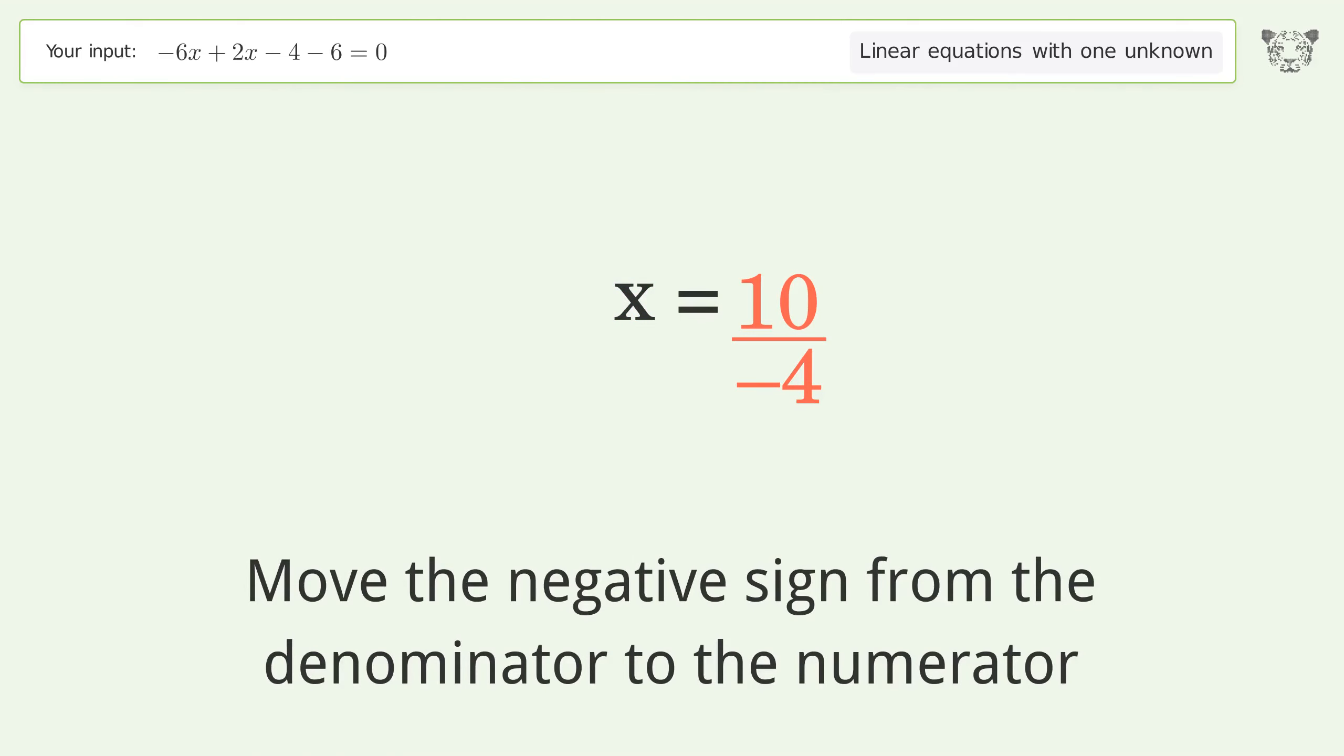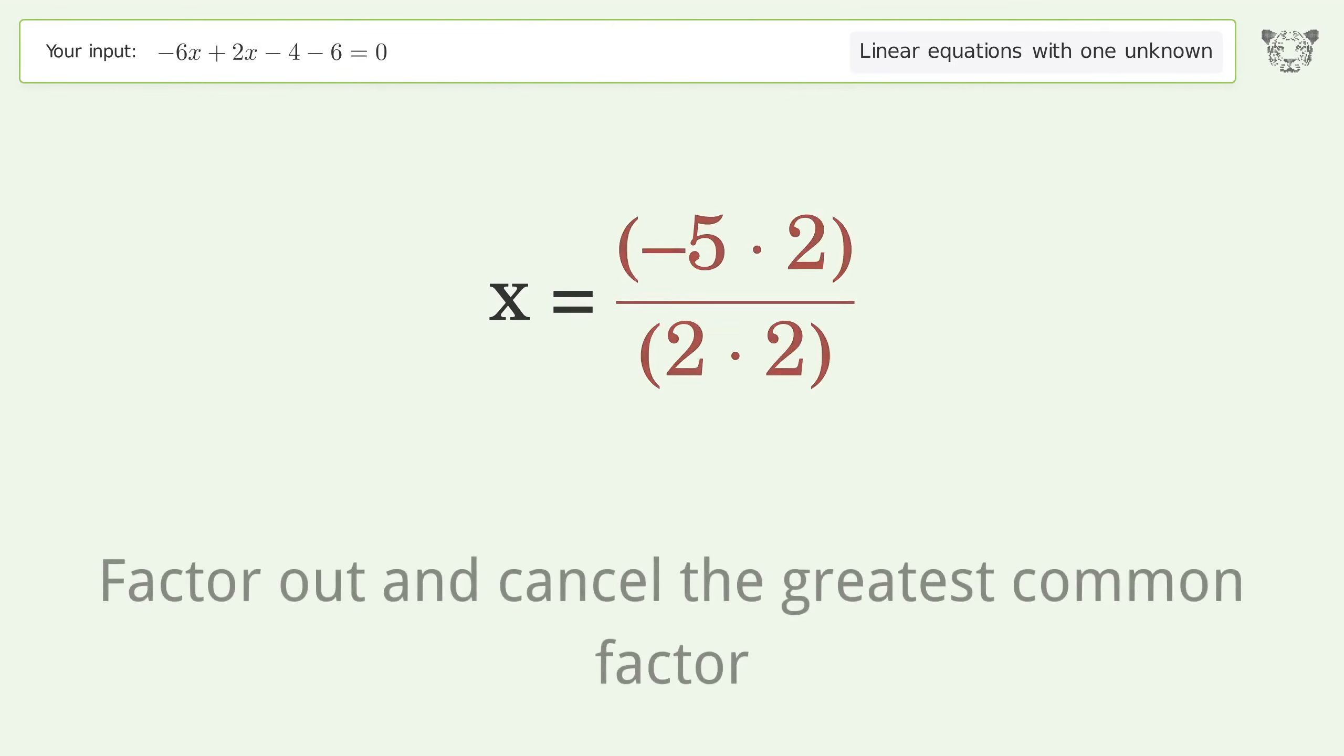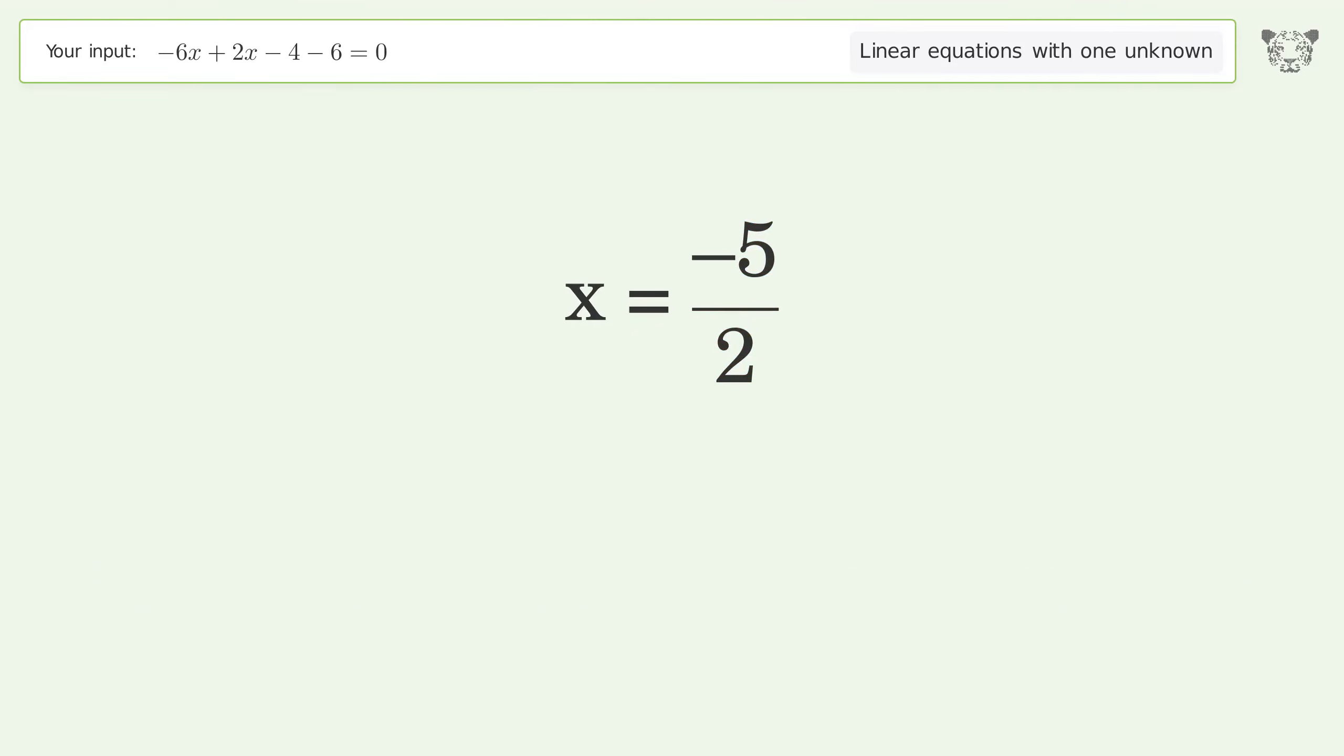Move the negative sign from the denominator to the numerator. Find the greatest common factor of the numerator and denominator. Factor out and cancel the greatest common factor. The final result is x equals negative 5 over 2.